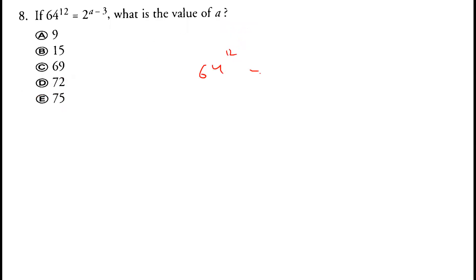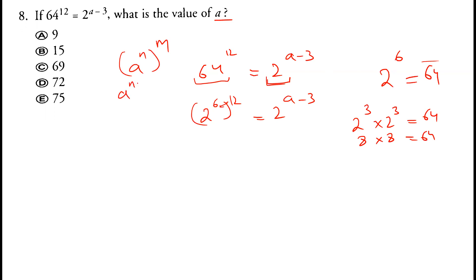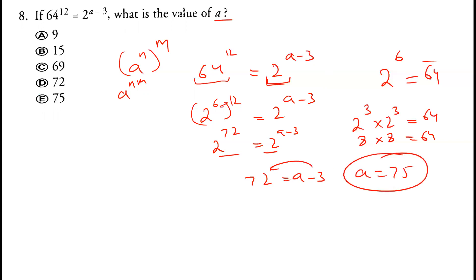Question 8: 64 raised to power 12 equals 2 raised to power (a minus 3). Find a. We need to express 64 as a power of 2. Since 2 to the power 6 equals 64, we have (2^6)^12 equals 2^72. Setting 72 equal to a minus 3 gives a equals 75. Option E is correct.